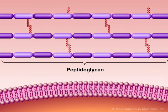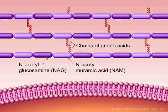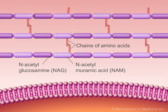Peptidoglycan, the most important component of the cell wall, is a polymer made of N-acetylmuramic acid alternating with N-acetylglucosamine, which are cross-linked by chains of four amino acids. The function of the bacterial cell wall is to maintain the characteristic shape of the organism and to prevent the bacterium from bursting when fluid flows into the organism by osmosis.